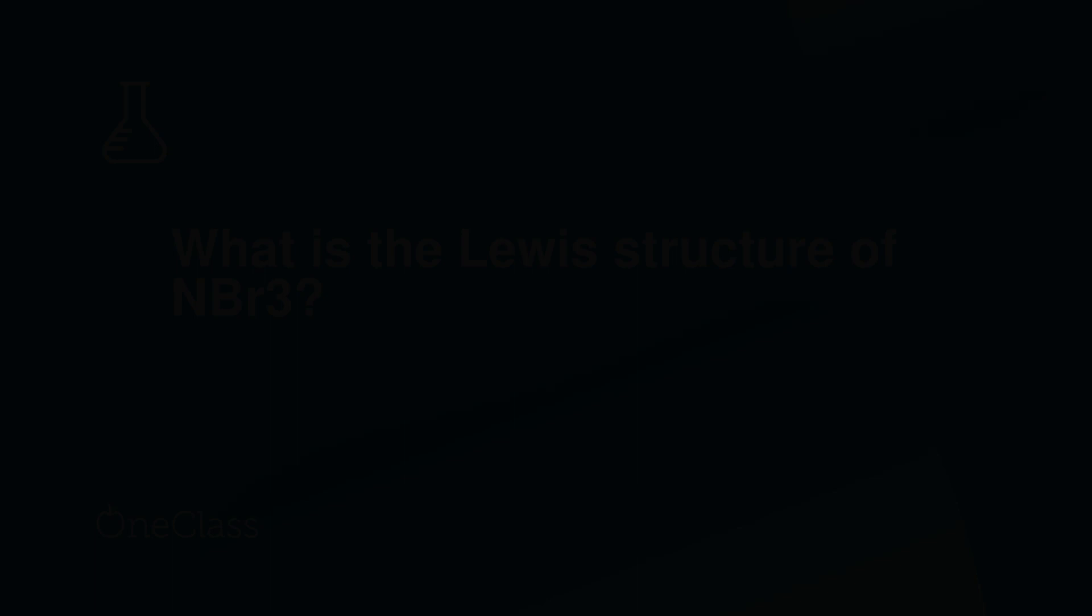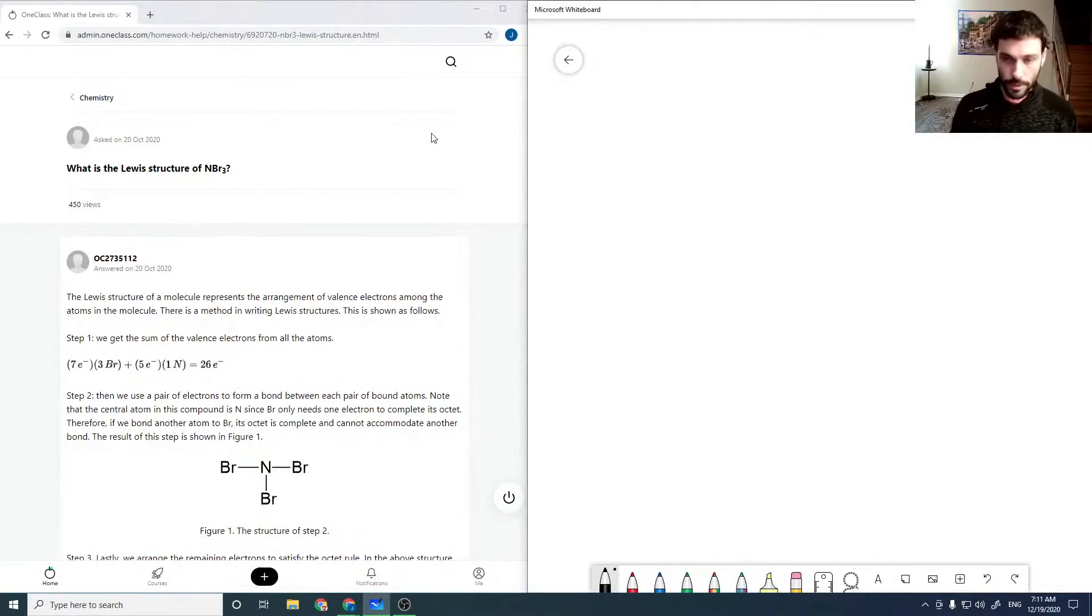What is the Lewis structure of NBr3? Alright, so NBr3, nitrogen has 5 valence. Each of the bromines contributes 7, so that's 21. So in total we have 26 valence.